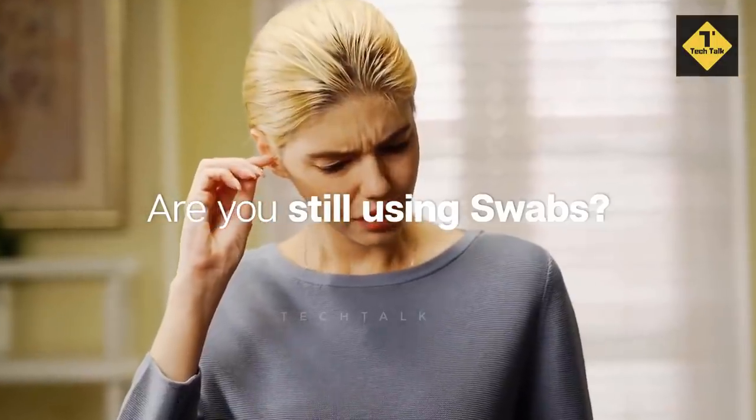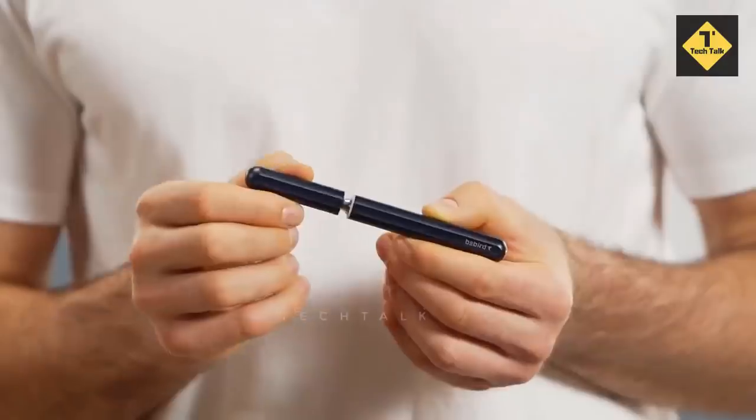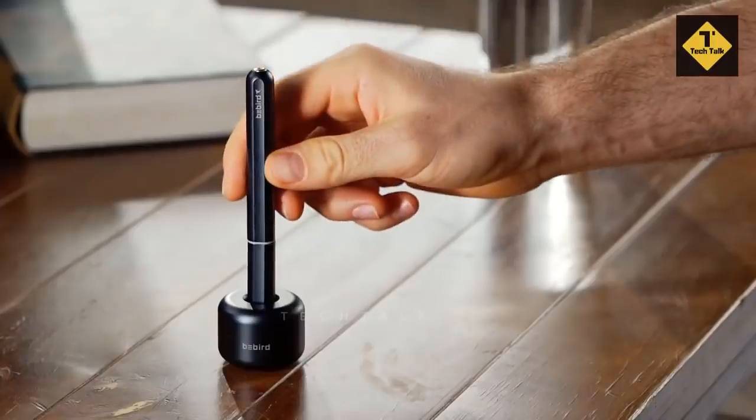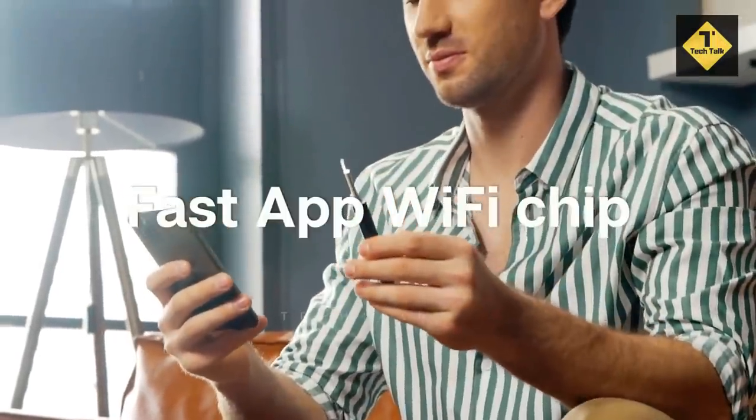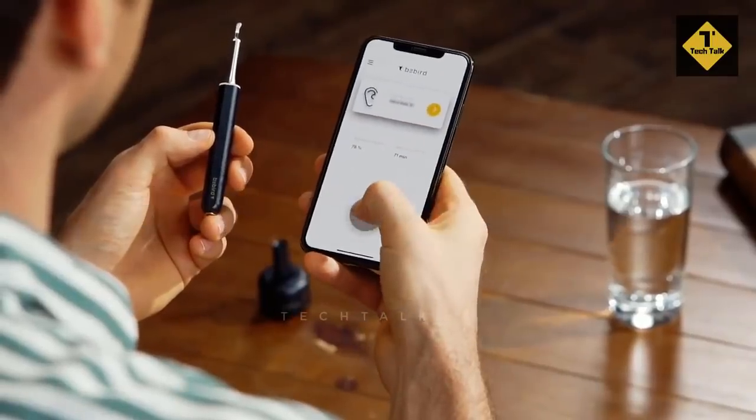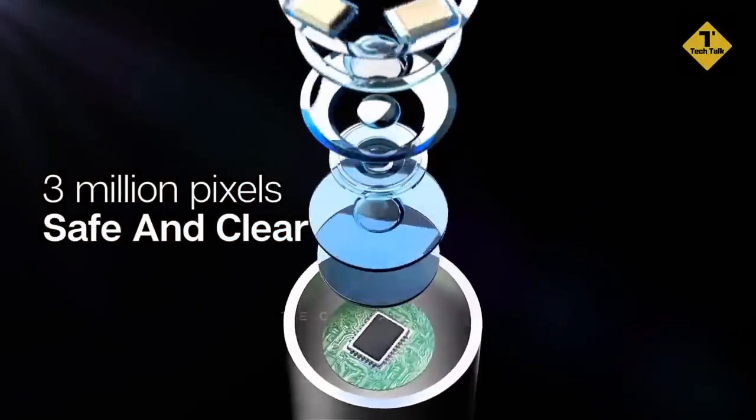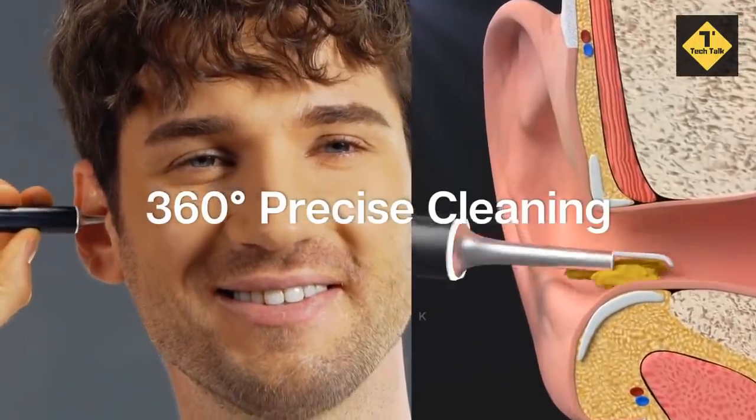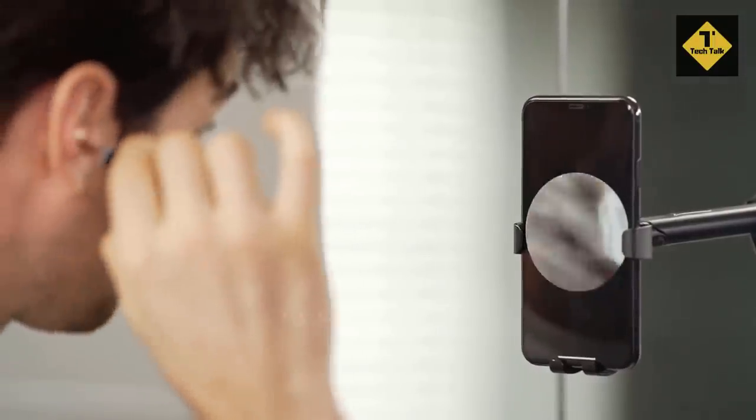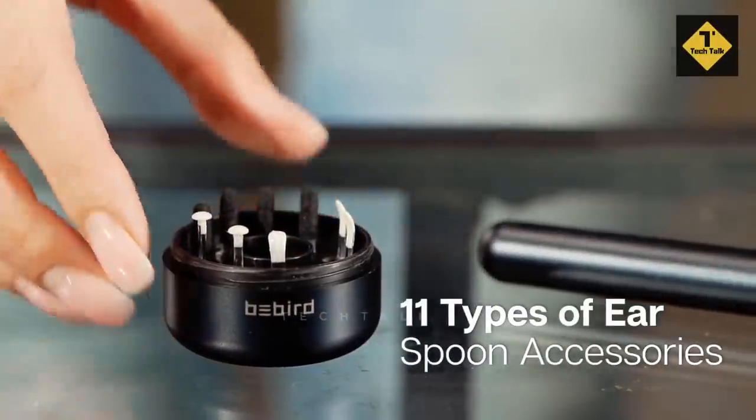Next on our list is the new generation near Otoscope, the Bird A2. It is innovatively equipped with UV lamp which will automatically clean the ear pick every time after you use the otoscope. It's made of soft, and the silicone protective plug can be adjusted to meet different ear canals which will protect the ear canal and ear drum from being hurt.